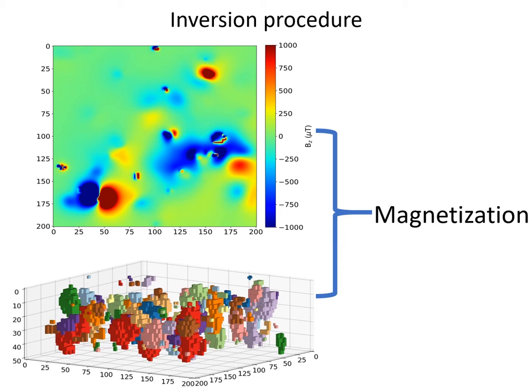Then we construct a surface magnetic field and add the appropriate level of noise to it. With the least squares inversion procedure, we obtain the magnetization, together with a standard deviation from a covariance matrix, which is dependent on the orientation of the grains.